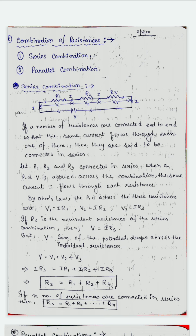You have to remember that in a series combination, current is the same but the potential drop across each resistance is different. And the total resistance of the system is the addition of individual resistances when they are connected in series combination.